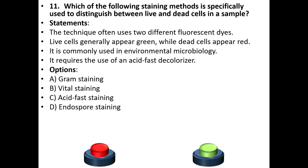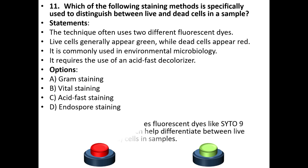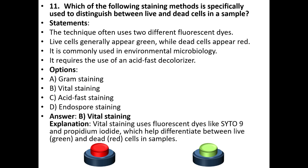The answer is B, vital staining. Explanation: Vital staining uses fluorescent dyes like SYTO9 and propidium iodide, which help differentiate between live (green) and dead (red) cells in samples.